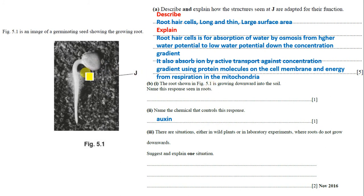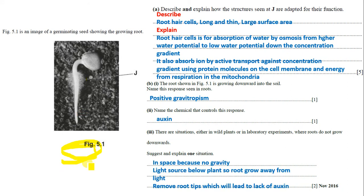The root shown in figure 5.1 is growing downward into the soil — this is positive gravitropism. The chemical that controls this process is auxin. There are situations where roots do not grow downward: for example, if there is a light source from beneath, roots grow away from light rather than downward. In space, there is no gravity. If a light source is below the plant, or if the root tips are removed causing lack of auxin, proper directional growth will not occur.